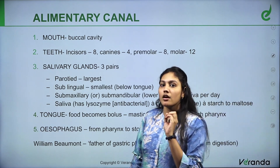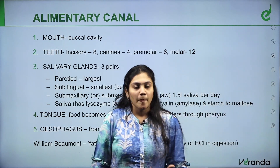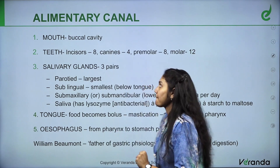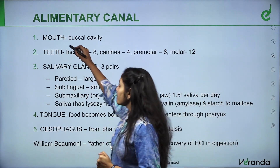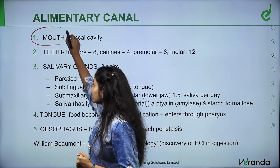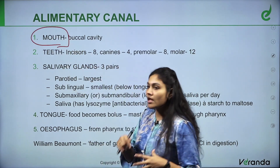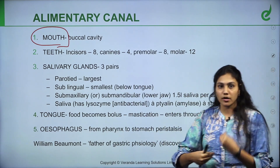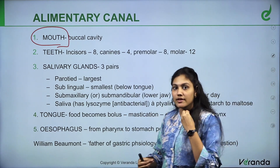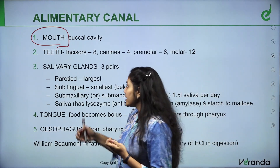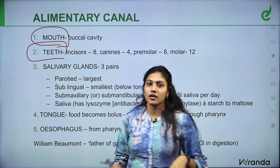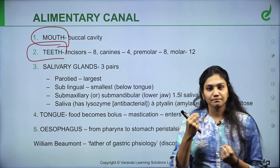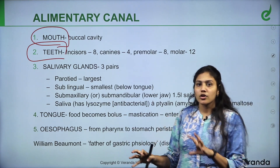Now, we have an alimentary canal — that is the alimentary canal, that is the dietary system. What is the alimentary canal? First, it starts with the mouth. Our mouth is the buccal cavity. So, we eat our food through our mouth — it starts from there. And then, with the help of teeth, we are going to break it down. We are going to chew the food.